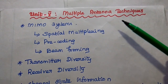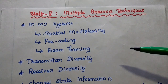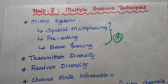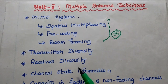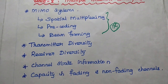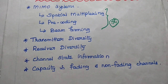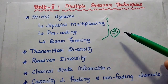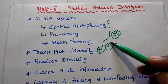The fifth unit covers multiple antenna techniques, specifically the MIMO system — Multiple Input, Multiple Output. Three important topics in this unit are spatial multiplexing, pre-coding, and beam forming. These are the concepts used in MIMO systems. We also have transmitter diversity and receiver diversity under multiple antenna techniques, along with channel state information and capacity in fading and non-fading channels. Concentrate more on the MIMO system and transmitter diversity, which are very important in this fifth unit.